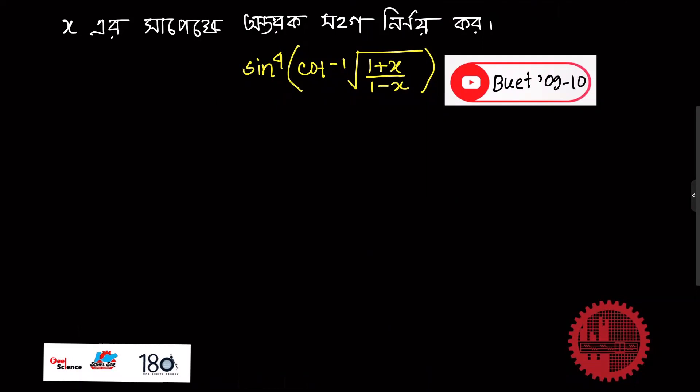This is a function you can see: sin to the power 4, cot inverse, root over (1 plus x) divided by (1 minus x).